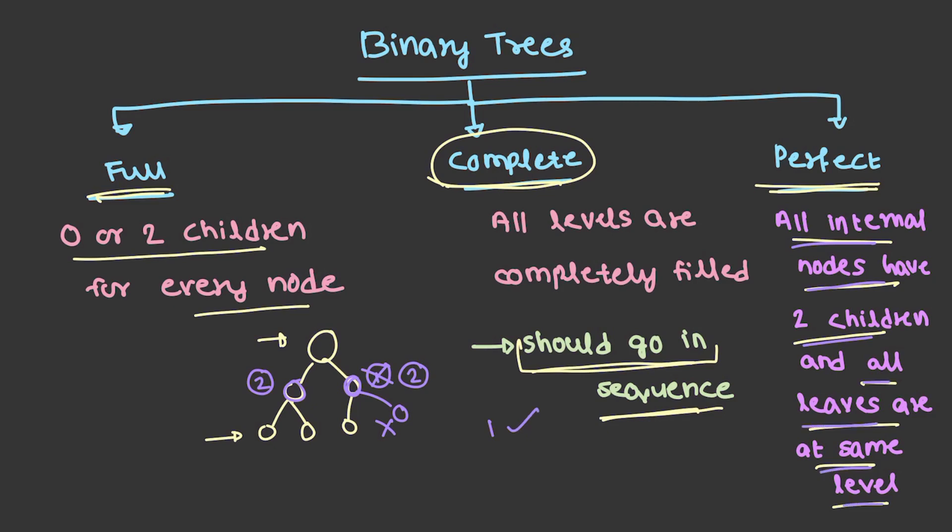But consider this. Now, this is also having 2 children. So, all the internal nodes are having 2 children. The first property is satisfied. All leaves should be at the same level. 1, 2, 3, 4. All these 4 are leaves and they are at the same level. This is level 0, level 1, level 2. All of these are at the same level. So, this satisfies to be a perfect tree. We have seen about trees and what are the different possible types of trees. In the next video, we will talk about the most important topic, tree traversal.